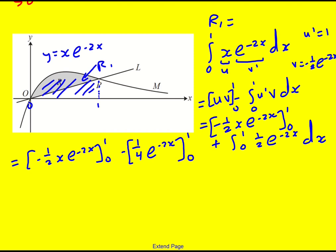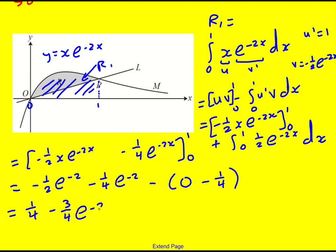You could put it actually into a single one at this point. So you know what, I think I'll do that. Okay, if I put in 1, I get minus a half e to the minus 2 minus a quarter e to the minus 2, and then minus 0 minus a quarter e to the minus 2, which is just 1. Which is going to give me a quarter, because I got a double negative, minus 3 quarters e to the minus 2.